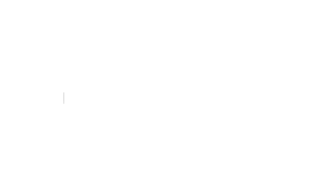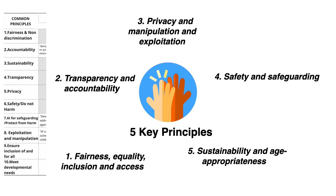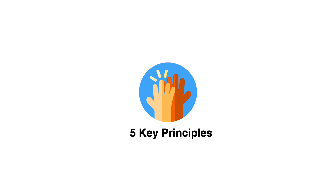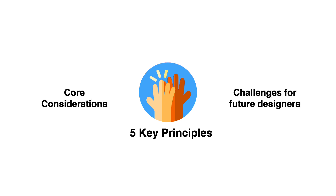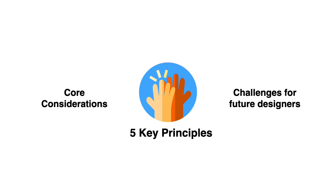What might our analysis suggest about assembling a code for age-appropriate AI design? Based on our findings, we synthesized the previously identified ten common design principles into five by grouping related considerations together. For each principle, we highlighted its core considerations and relevant challenges for future designers. Starting with the first: fairness, equality, inclusion, and access.